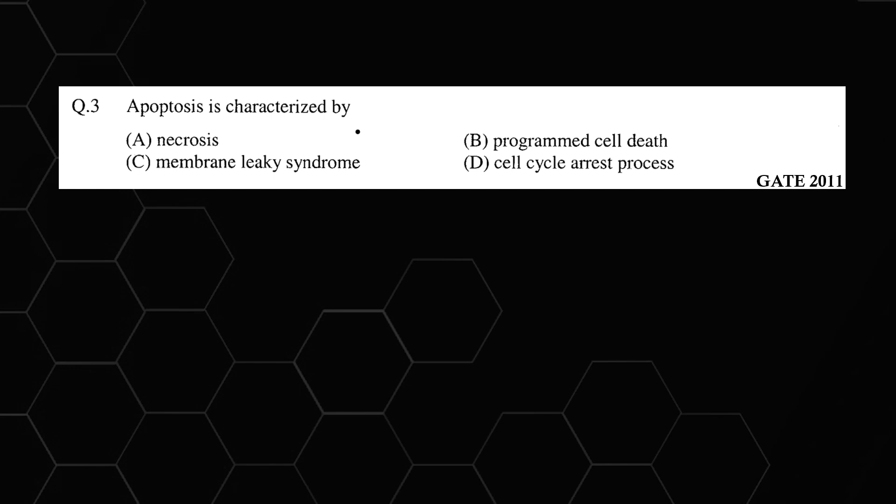Hello everyone, we are solving question number three of GATE 2011. It says apoptosis is characterized by: (A) necrosis, (B) programmed cell death, (C) membrane leaky syndrome, or (D) cell cycle arrest process. So apoptosis is a process of programmed cell death, so our answer here is going to be B.